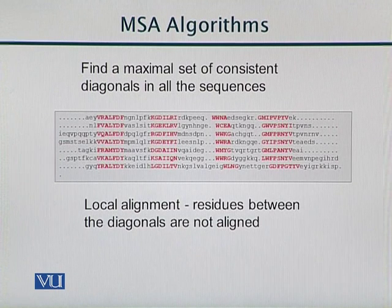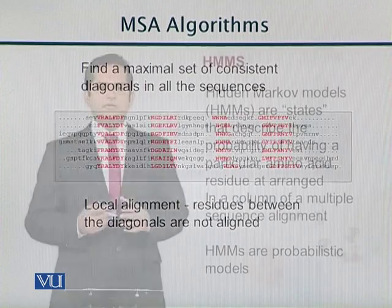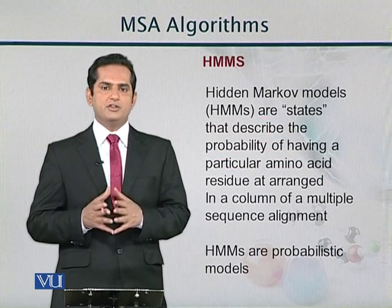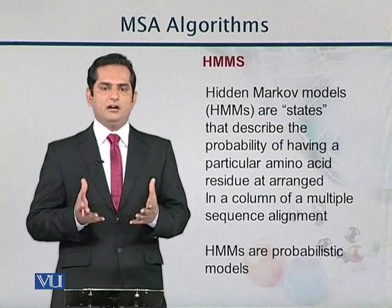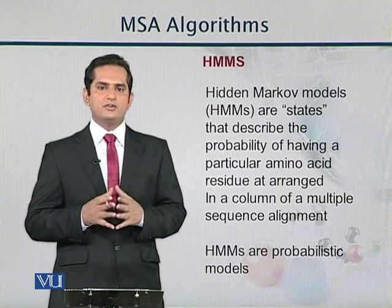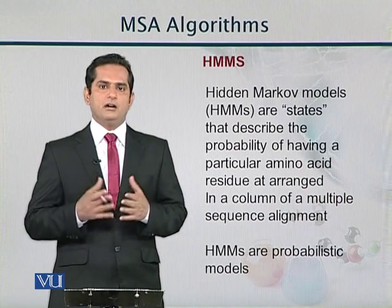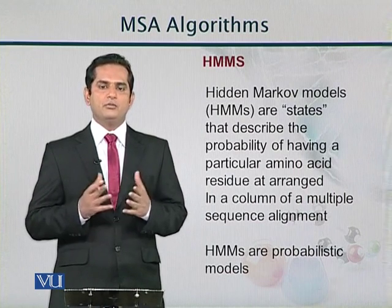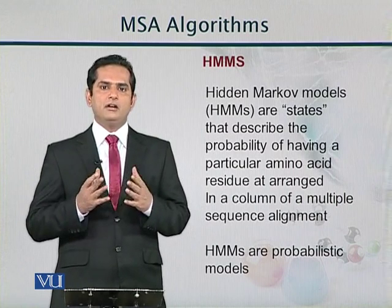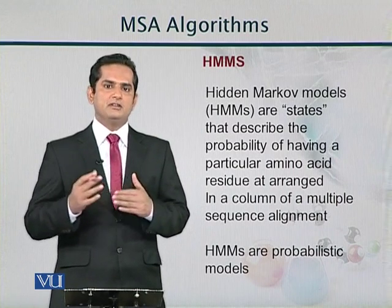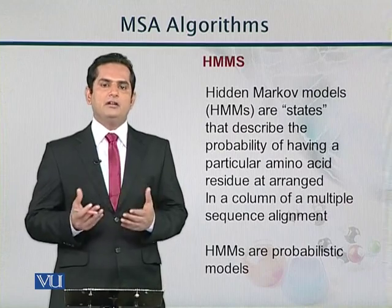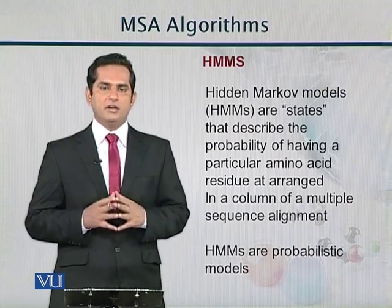Finally, we have Hidden Markov Models. They are probabilistic state machines that calculate the likelihood of occurrence of different alignment configurations. Essentially, we want to find out the probability that two sequences are aligned to each other and how they are evolutionarily related, based on probabilistic measures.